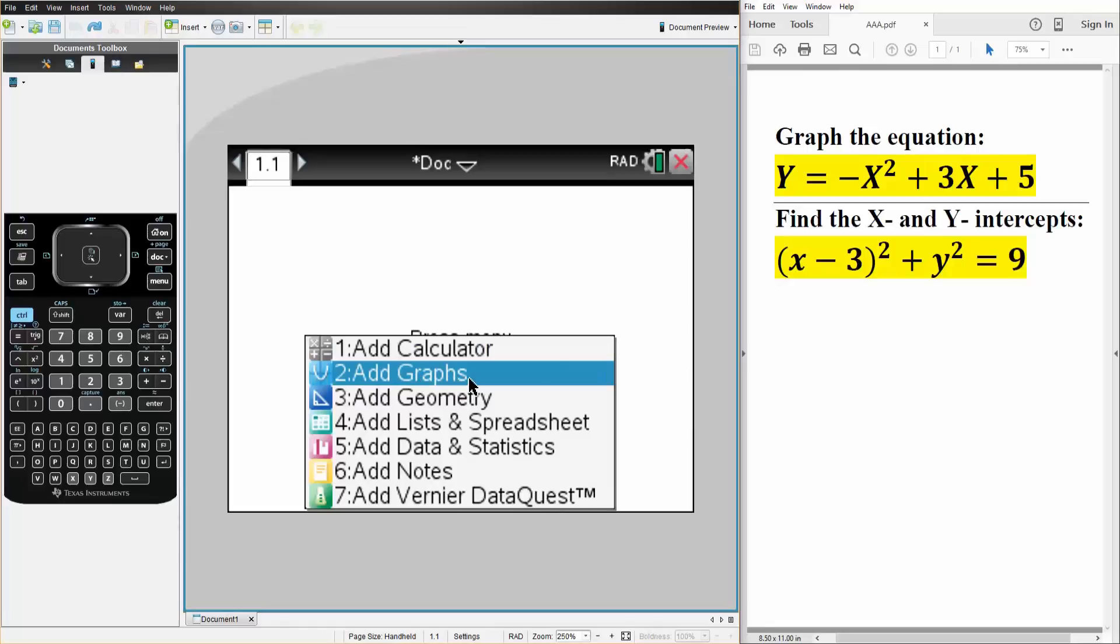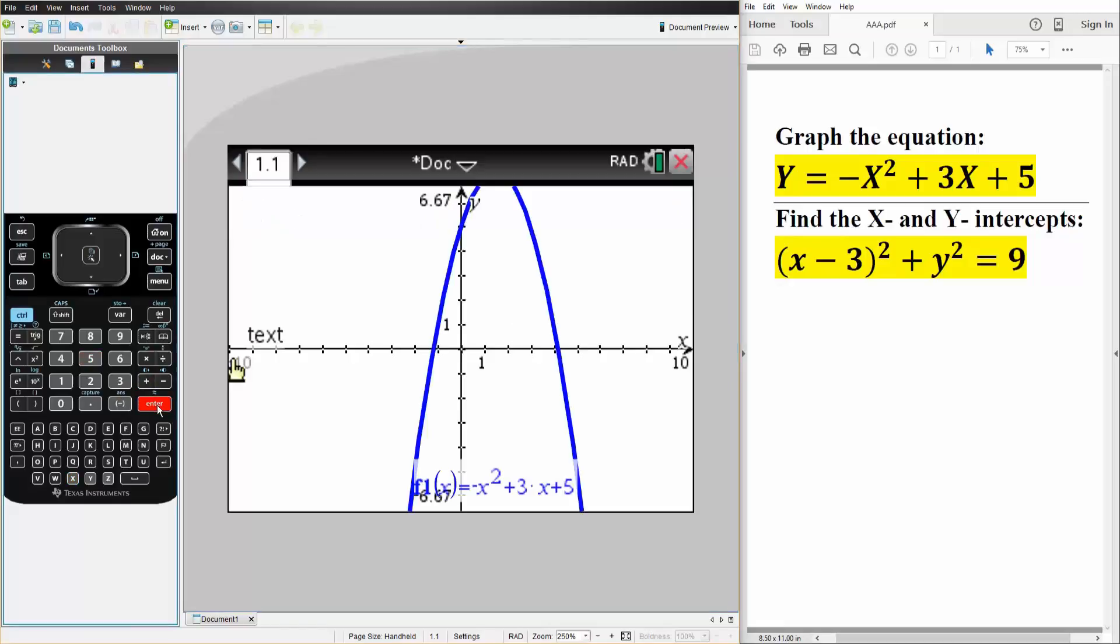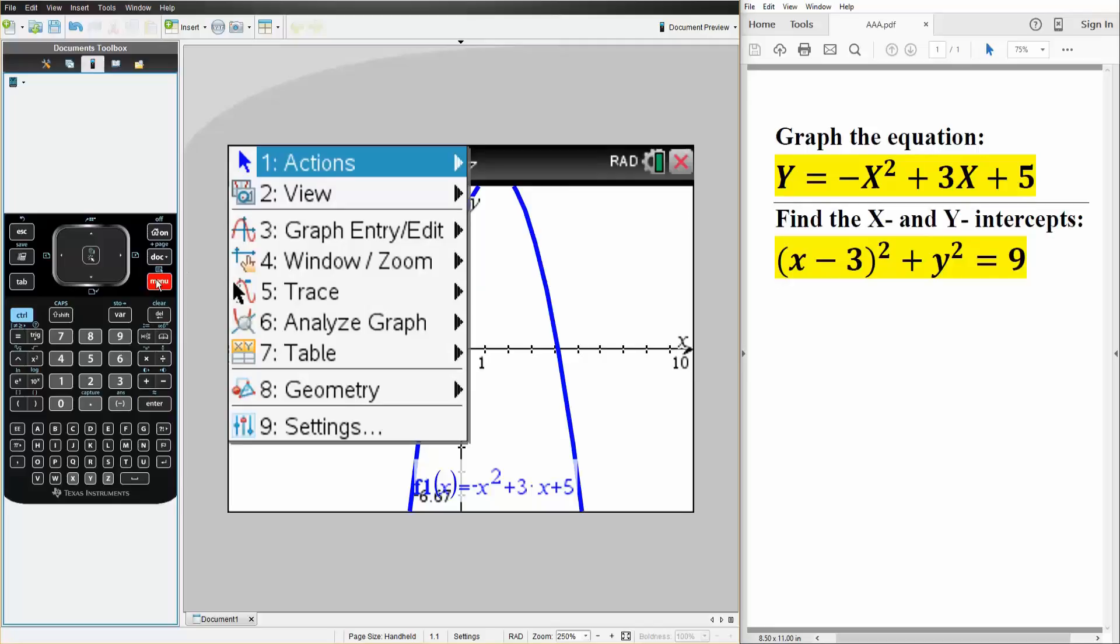And we want to graph this, so this is a negative x squared, then we have plus three times x plus five. Simply hit enter.